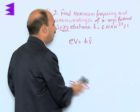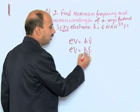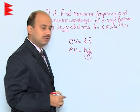So, when we calculate the wavelength we can write E V is equal to H C by lambda. This will be the minimum wavelength because the frequency is maximum.